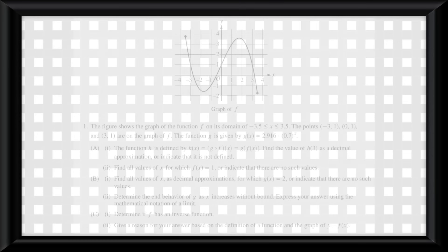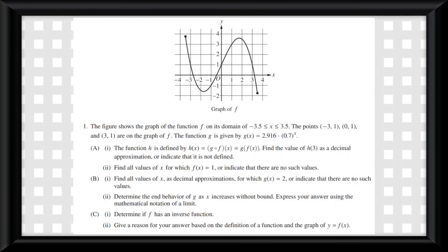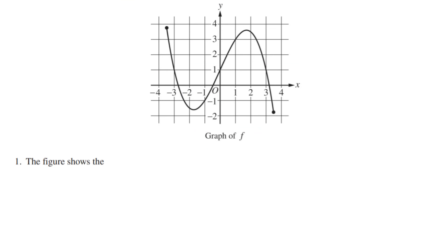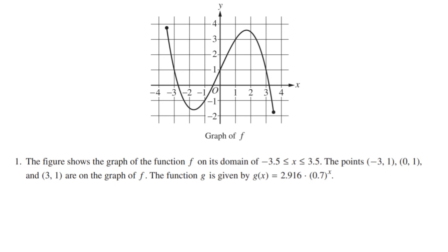So, let's do it together. And look at that, they give us a graph. The figure shows the graph of the function f on its domain of negative 3.5 to positive 3.5. The points negative 3, 1, 0, 1, and 3, 1 are on the graph of f. The function g is given by g of x equals 2.916 times 0.7 to the x. So we are actually given a graph and an equation here. So let's do some labeling. The f function is the graph, and the g function is the equation.